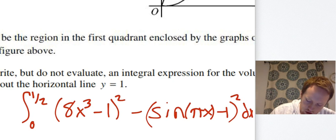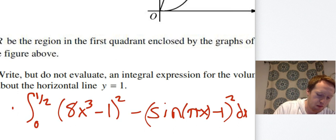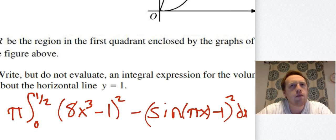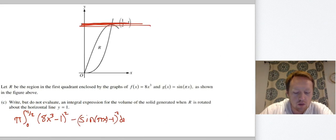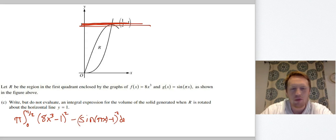Remember to put π out front since this is π r². A lot of people note it should be 1 minus the functions since the axis is above, but it doesn't matter because we're squaring — it comes out the same either way.